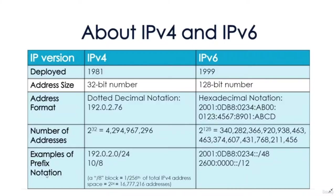IP version 6 is the successor to IP version 4, featuring far larger address space, simpler routing, and simpler address assignment. A lack of IPv4 addresses was the primary factor that led to the creation of IPv6. Most modern systems are now dual-stacked and use both IPv4 and IPv6 simultaneously. Hosts may also access IPv6 networks via IPv4, which is called tunneling.